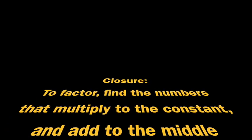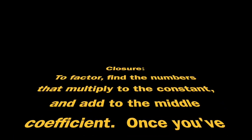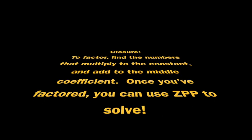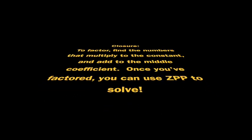To summarize this lesson, in order to factor, you need to find the two numbers that multiply to the constant and add to the middle coefficient. Once you've found these two numbers and factored, you can use ZPP to solve. If you came away with anything else, write that down now. Otherwise, we'll see you in the next lesson.